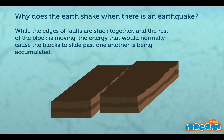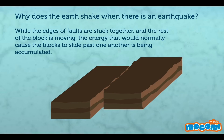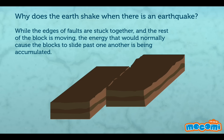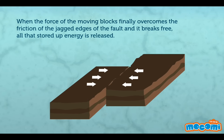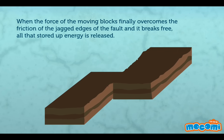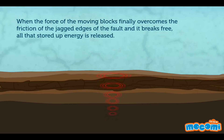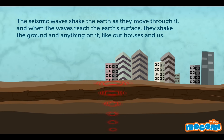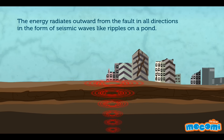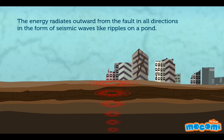Why does the earth shake when there is an earthquake? While the edges of the faults are stuck together and the rest of the block is moving, the energy that would normally cause the blocks to slide past one another is being accumulated. When the force of the moving blocks finally overcomes the friction of the jagged edges of the fault, it breaks free and all that stored up energy is released. The seismic waves shake the earth as they move through it, and when the waves reach the earth's surface, they shake the ground and anything on it like our houses and us. The energy radiates outward from the fault in all directions in the form of seismic waves, like ripples in a pond.